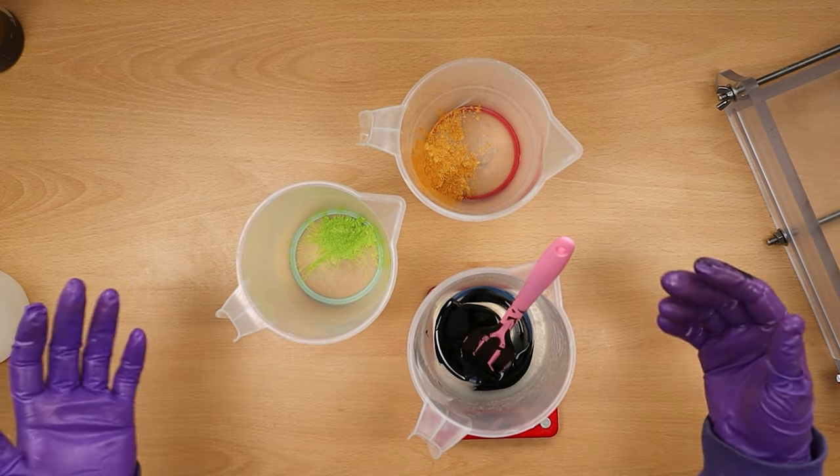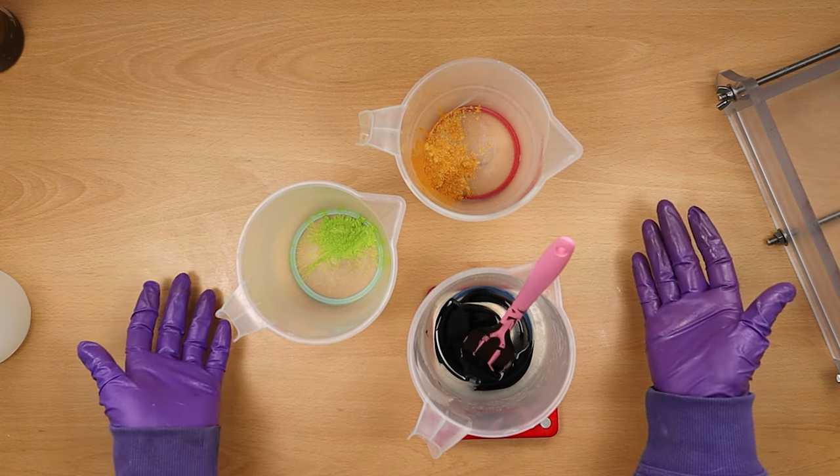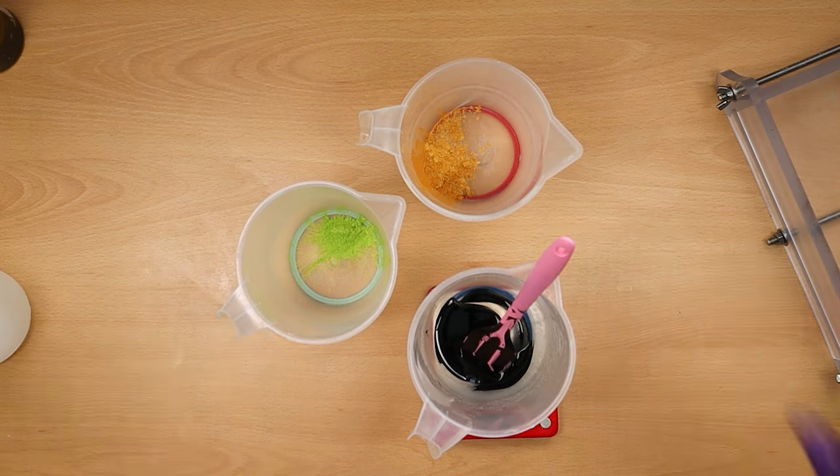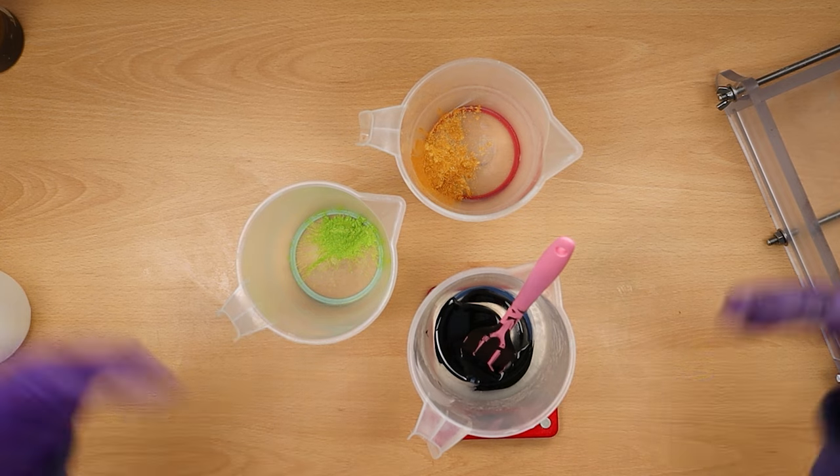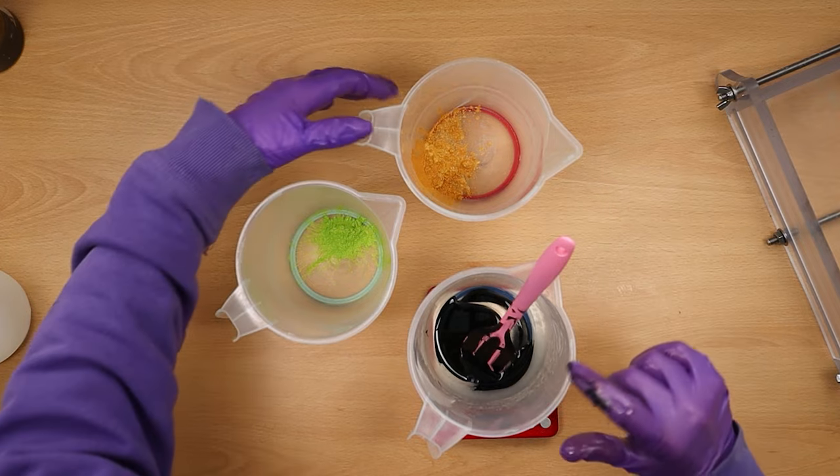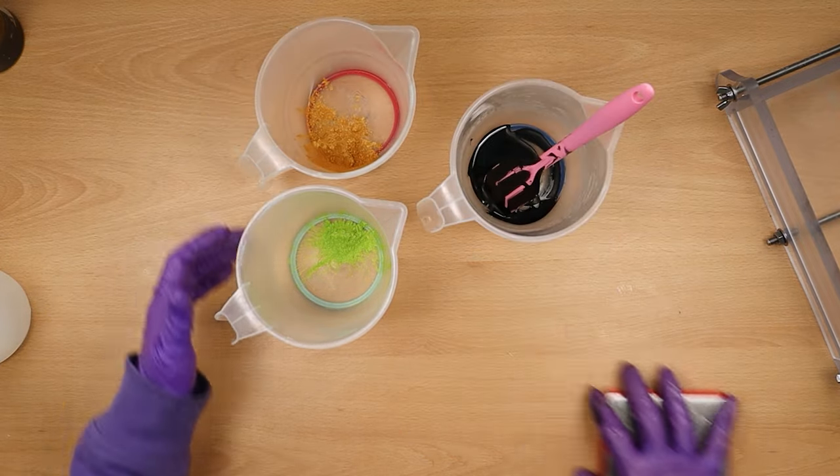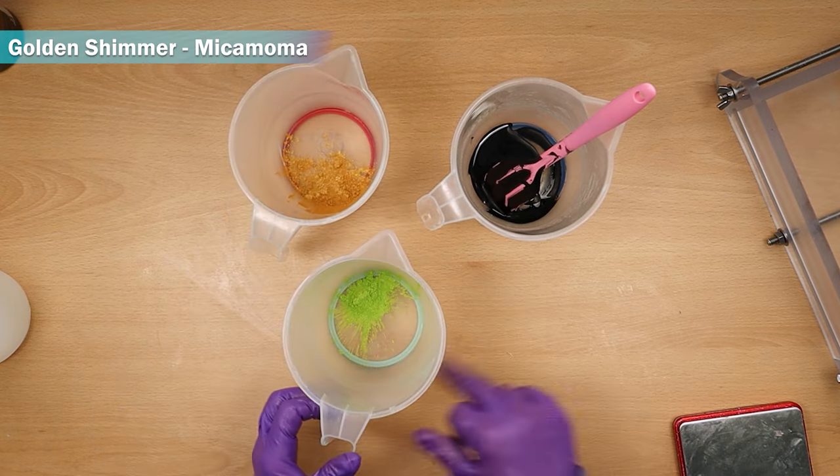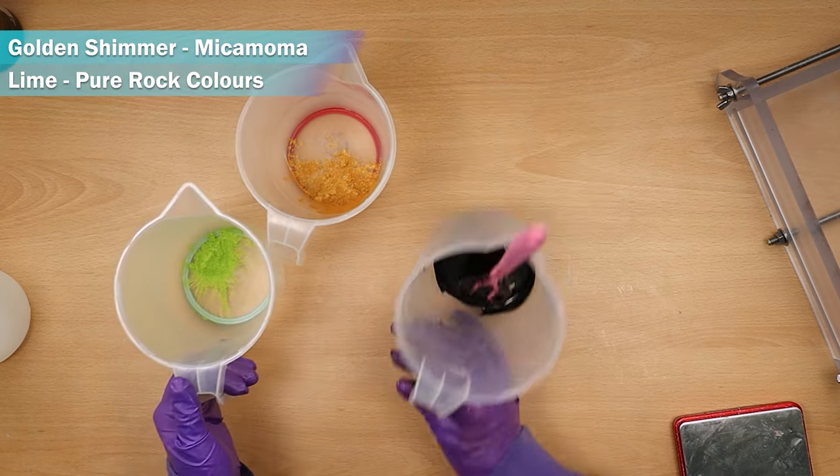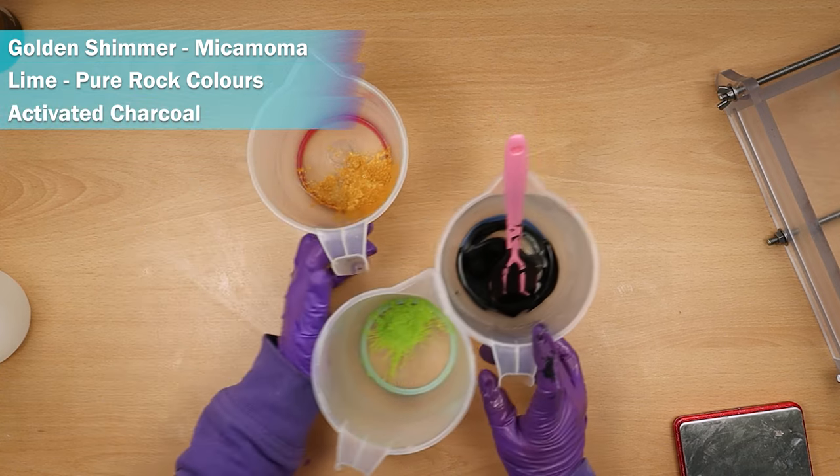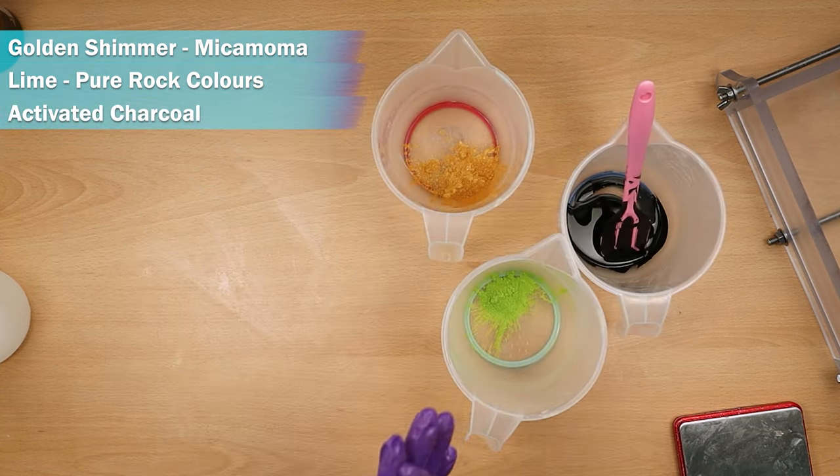So that's what I'm going to do today. Now this isn't going to be a tutorial as such because this is the first time I'm doing it, so I've got the basic idea of how it's done and we're just going along and seeing how it works out. I've got some micas that I'm going to be using - some golden shimmer from Micamama, some lime from Pure Rock Colors, and some activated charcoal.